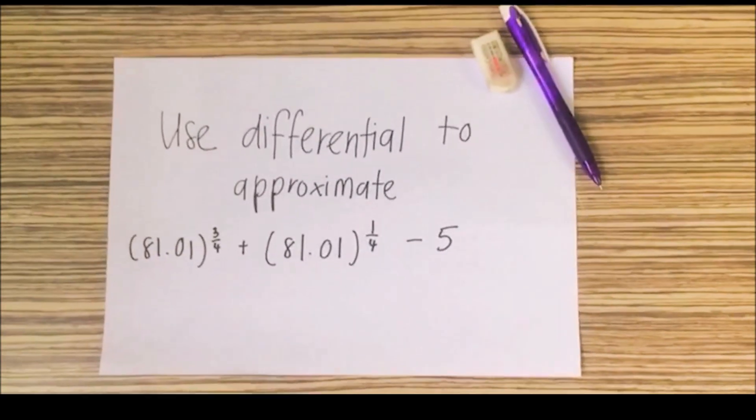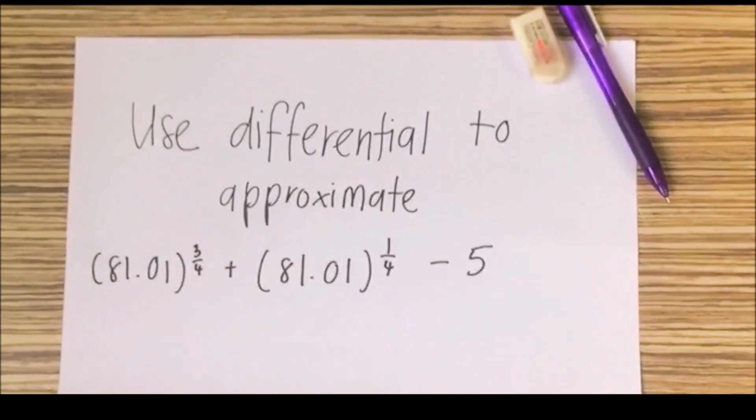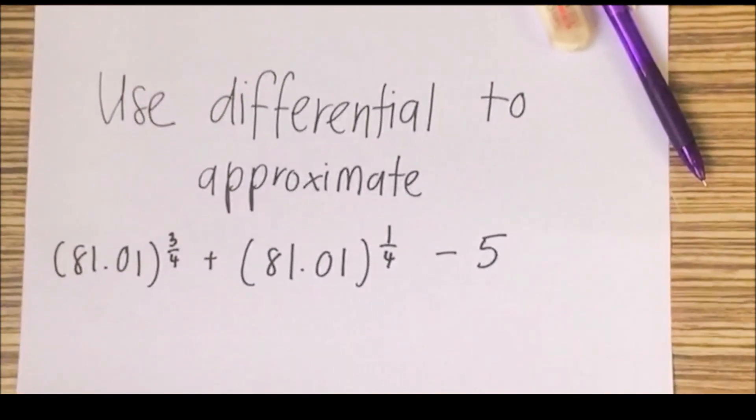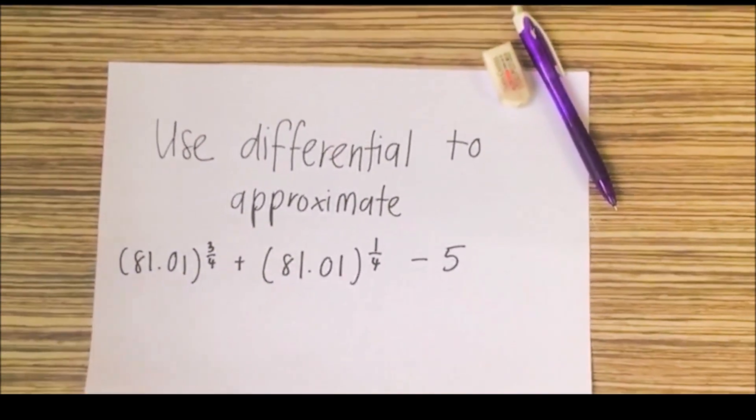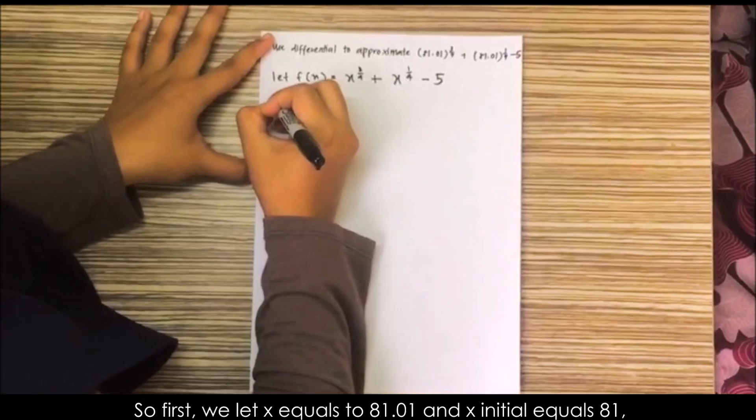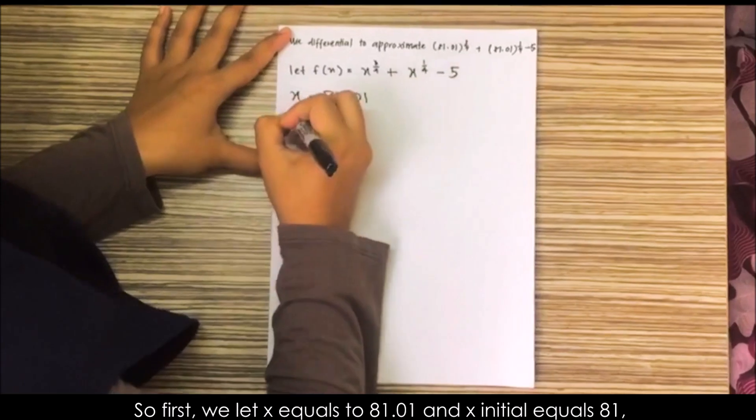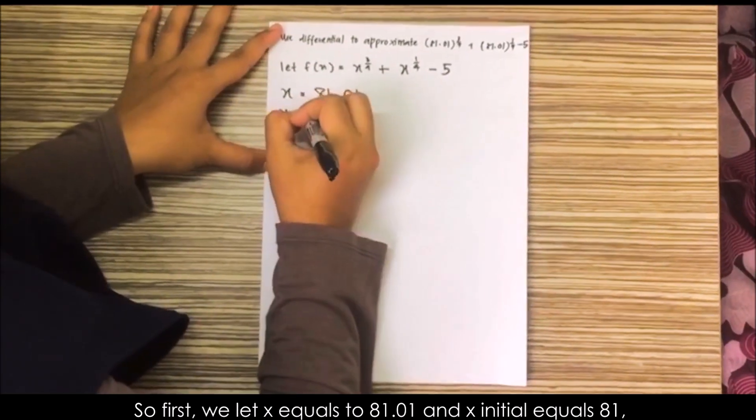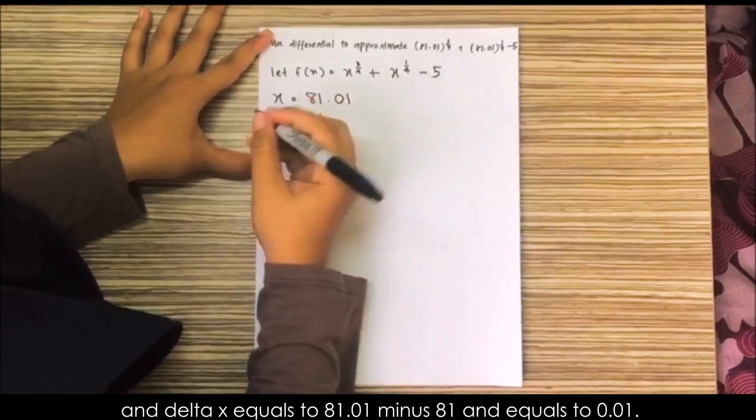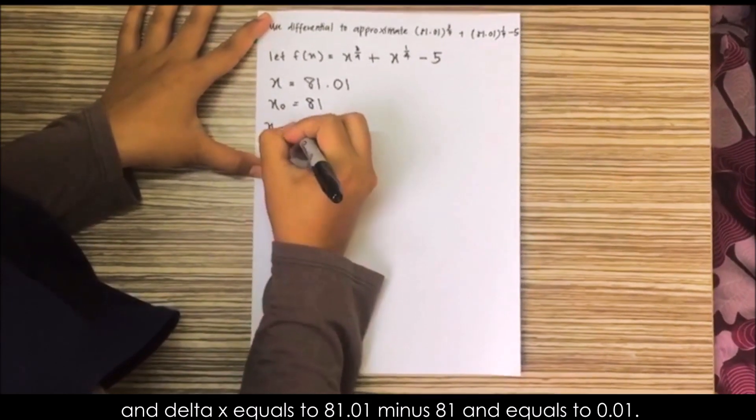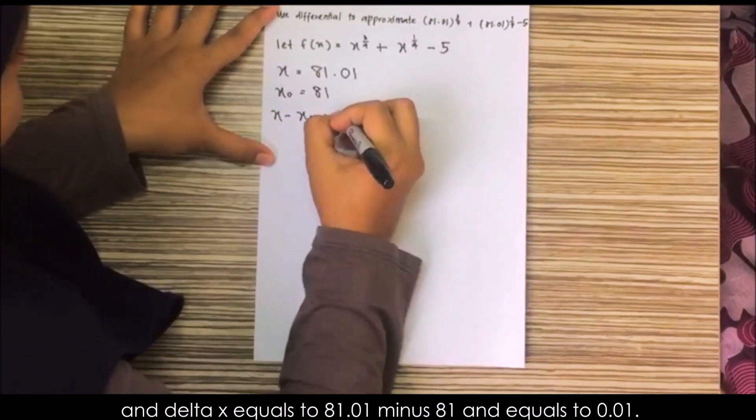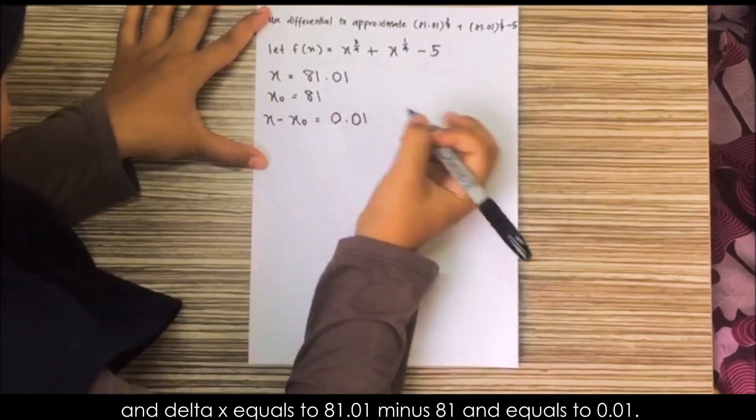Use differential to approximate (81.01) to the power of 3 over 4 plus (81.01) to the power of 1 over 4 minus 5. So, first, we let x equals 81.01 and x initial equals 81. And delta x equals 81.01 minus 81 and equals 0.01.